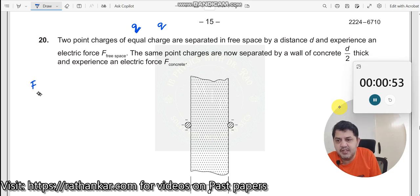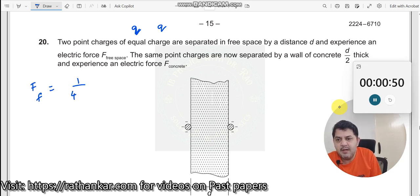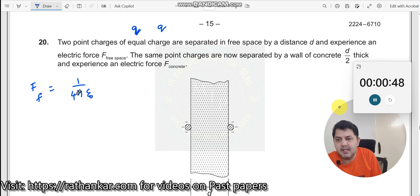Let me write down the equation. F free space is equal to 1 by 4 pi epsilon naught, 1 by 4 pi epsilon naught into Q into Q divided by d square.